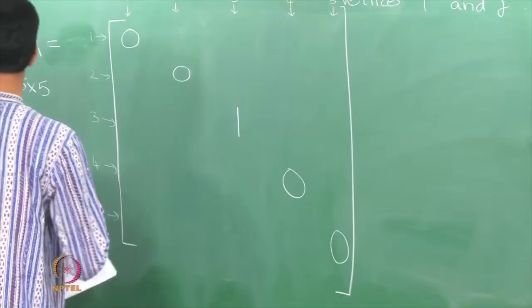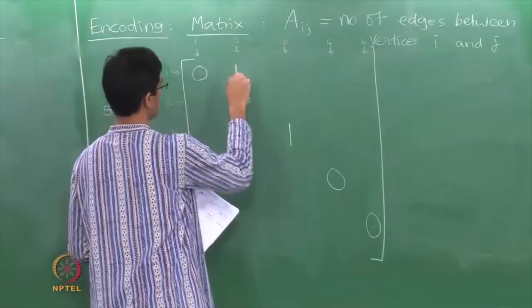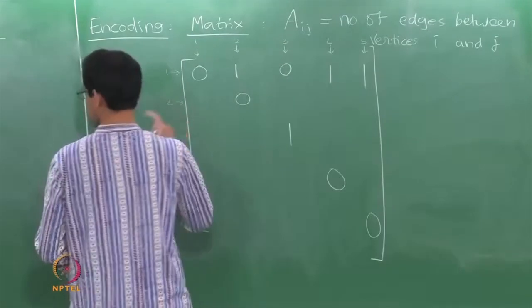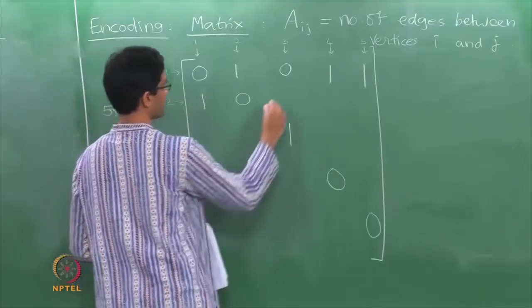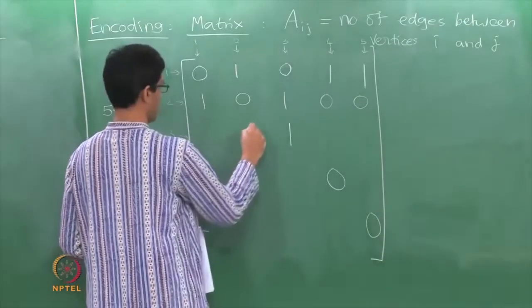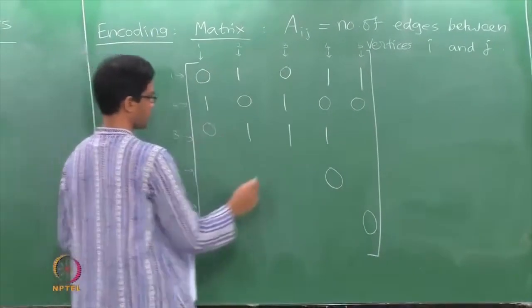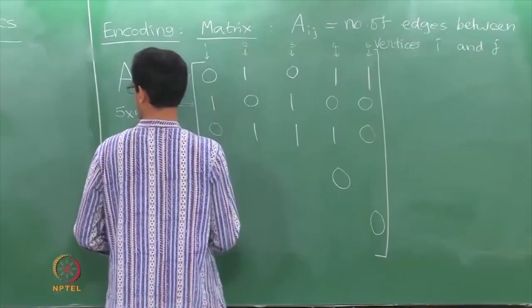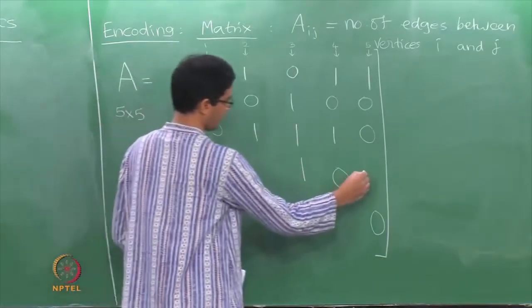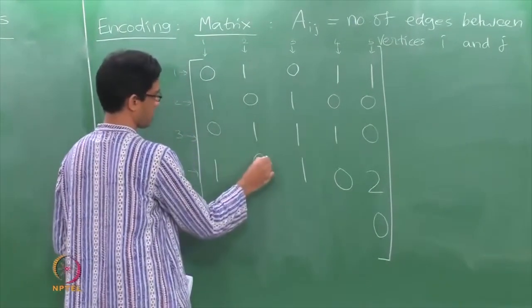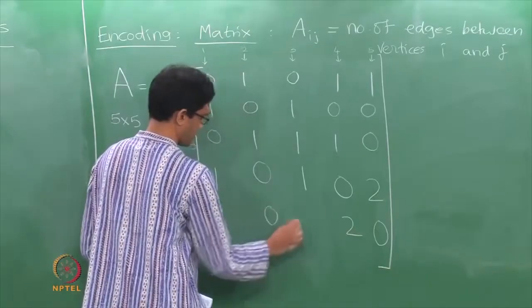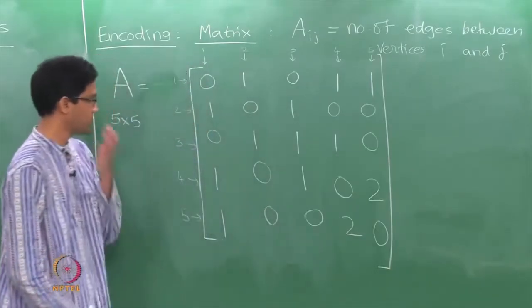There is an edge connecting 1 and 2, 1 and 4, and 1 and 5, but no edge connecting 1 and 3, so that entry is 0. Connecting 2 to 1 and 3 there is 1 edge each and 0 elsewhere. Connecting 3 to 2 and 4 there is 1 edge each; to itself there is a loop. From 4 to 1 there is an edge, 4 to 3 there is an edge, and 4 to 5 there are 2 edges — a multiple edge. Between 5 and 1 there is an edge, and between 5 and 4 there are 2 edges.